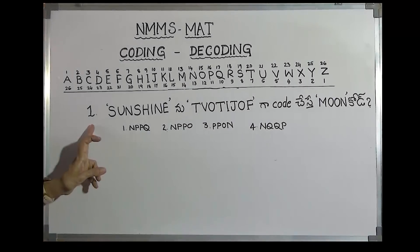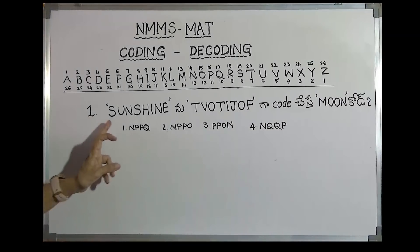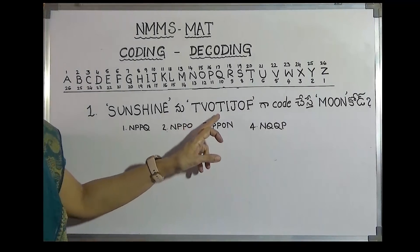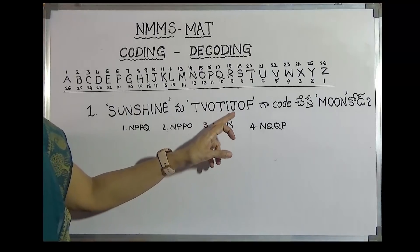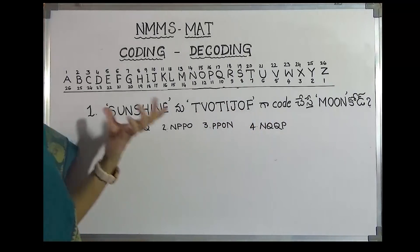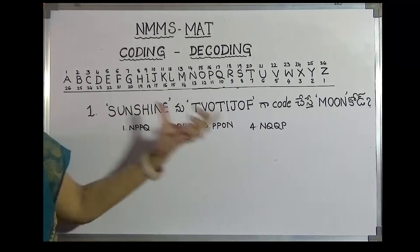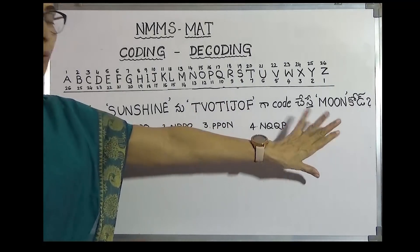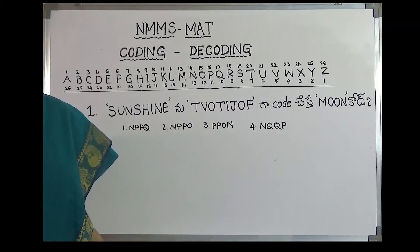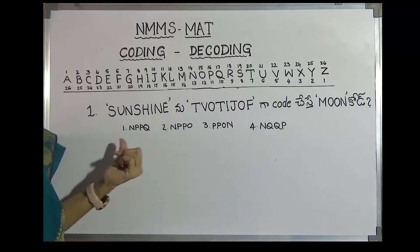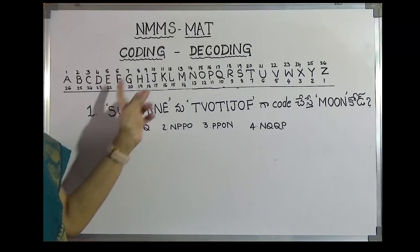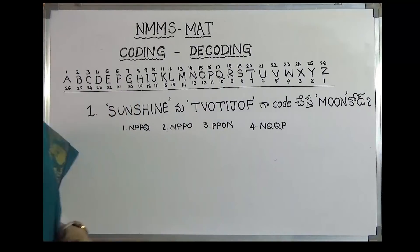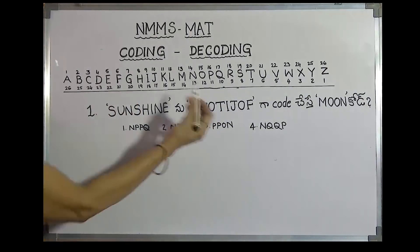First of all, we have to read the code. The code is T-V-O-T-I-J-O-F, and this code is called Sunshine. There are three codes and here are four answers. This code L-A-J-S-A-R-U is related to this code.